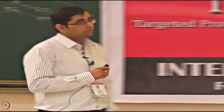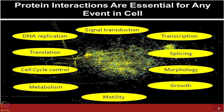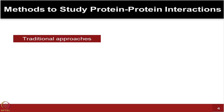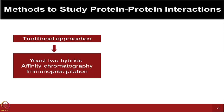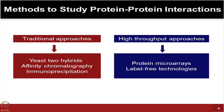By now you should be convinced that these technologies are very useful to study the entire interactome, which is involved in many important activities — whether signal transduction, splicing, morphology, growth, metabolism, translation, or DNA replication — all relevant for physiological processes. Many protein interaction methods have come forward: traditional approaches include yeast two-hybrid and IP methods, and the latest include protein microarrays, cell-free expression-based arrays such as NAPPA arrays, and label-free biosensor platforms.